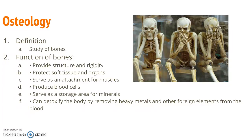A forensic anthropologist will use osteology quite a bit. Osteology in general is the study of bones. Bones provide structure and rigidity for our bodies — without a skeleton, we would literally be a blob rolling across the ground. They protect soft tissue and organs; our rib cage protects our lungs and heart. They serve as an attachment site for muscles, produce blood cells in a process called hematopoiesis, serve as storage for minerals like calcium, and can detoxify the body by removing heavy metals and other foreign elements from the blood.